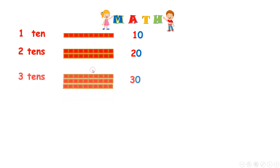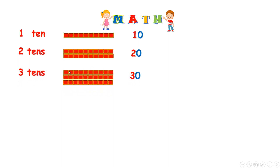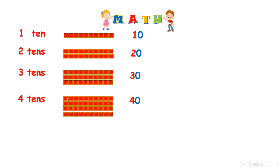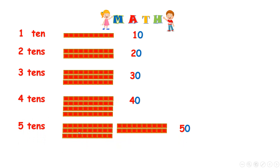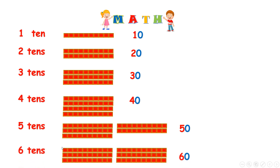Now, 3 tens are 10 and 10 and 10 — 30. 3 tens are 30. 4 tens: 10 plus 10 plus 10 plus 10, we have 40. So 4 tens are 40. 5 tens — we have 5 tens — and 5 tens are 50. 6 tens — we have 6 tens — 10 and 10 and 10, then 10 and 10 and 10. 6 tens are 60. Great job!